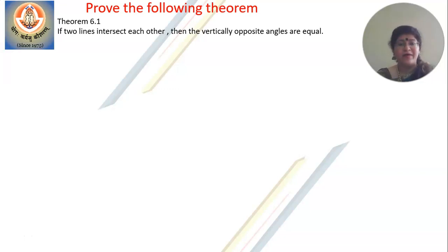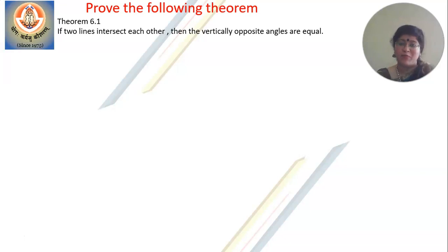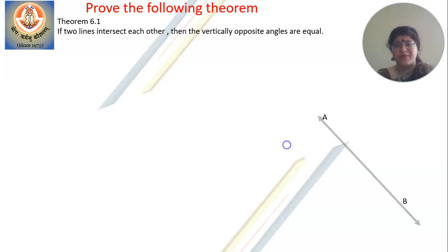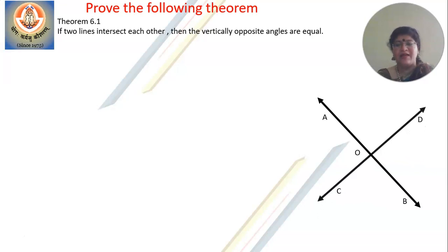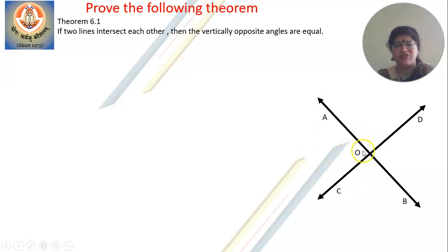If you remember, you have done this even in grade 7. According to this theorem, what would the diagram look like? You have to draw two lines intersecting each other — take one line AB and another line CD. Let both these lines intersect each other at point O.